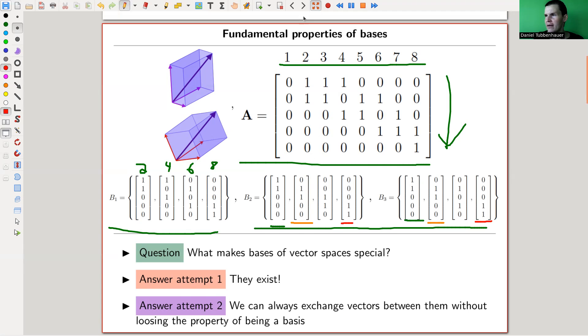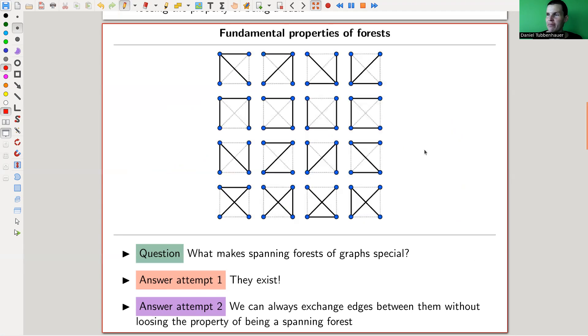And then we observe that the same property is true for, for example, spanning forests. So forest is just a collection of trees and spanning means it hits all vertices. So here are, the graphs that I have here in the background is kind of the graph in the background is this one here. And the collection you see here, these are all spanning trees, forests, whatever, of the graph. And again, we ask the same question. What makes them special? And again, they exist. We were right. They exist. Yay.